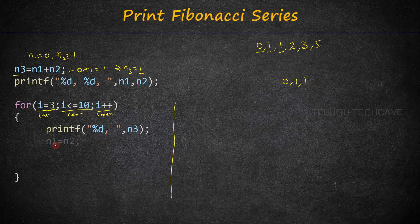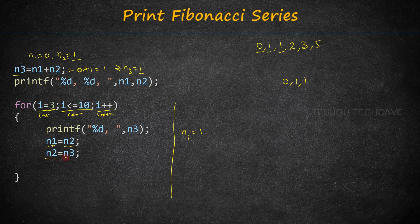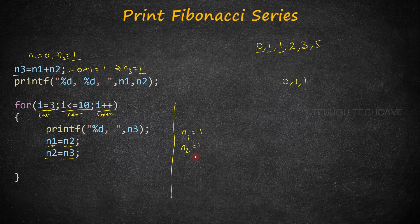Next, n1 is equal to n2 — this stores the value of n2 into n1. So n1 now holds the value 1. Then, n2 is equal to n3 — this stores the value of n3 into n2. So n2 now holds the value 1.